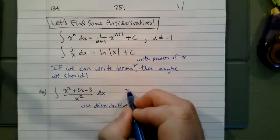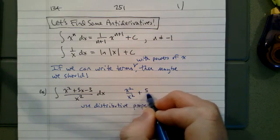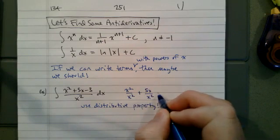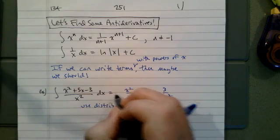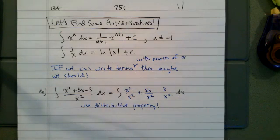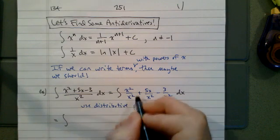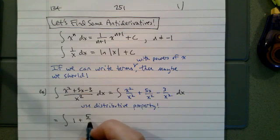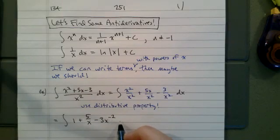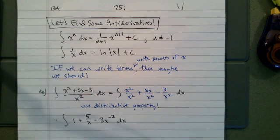Think of this as x squared over x squared plus 5x over x squared minus 3 over x squared. We're just using the distributive property, and since we can write terms with powers of x, we should. So we actually end up integrating 1 plus 5 over x minus 3, and I'm going to write this one as x to the negative 2 dx, because now I can just use the power rule.